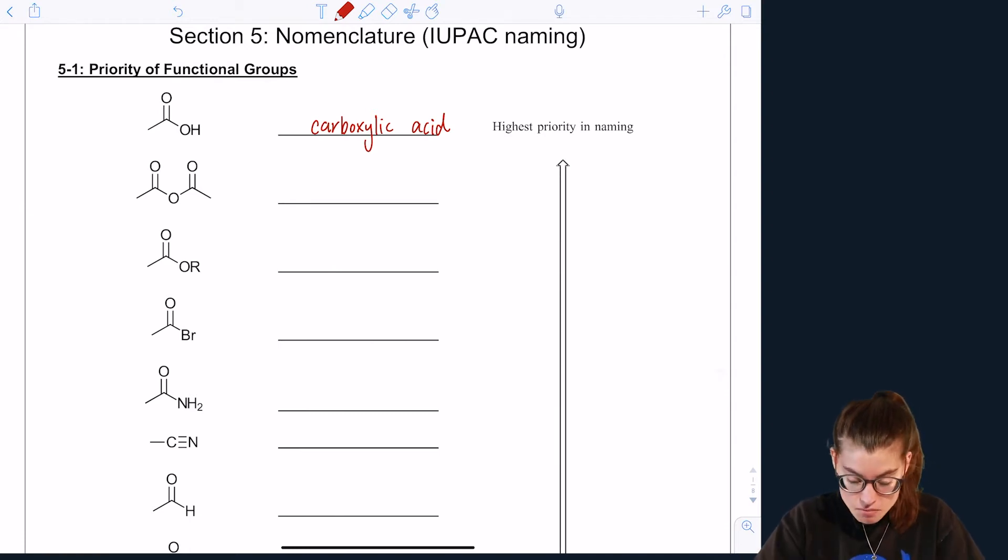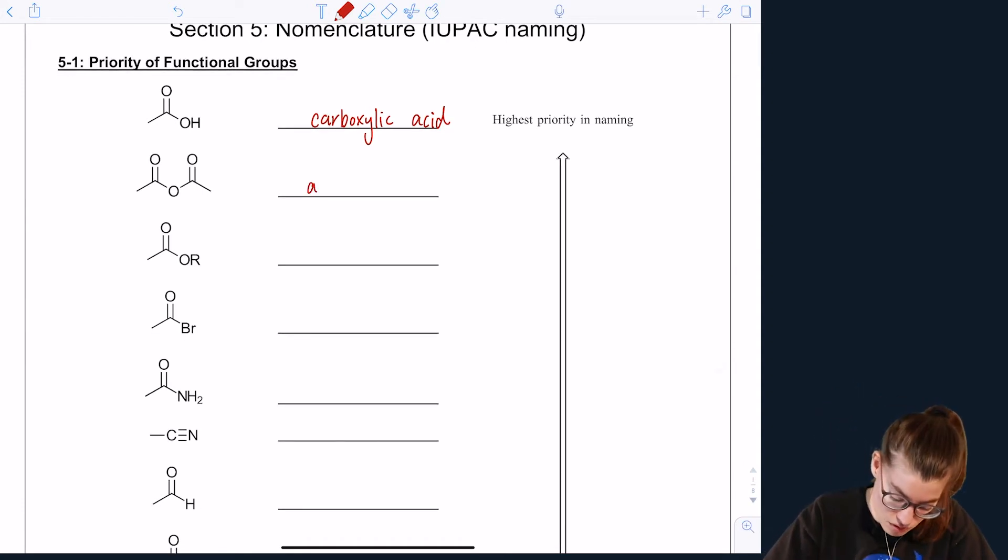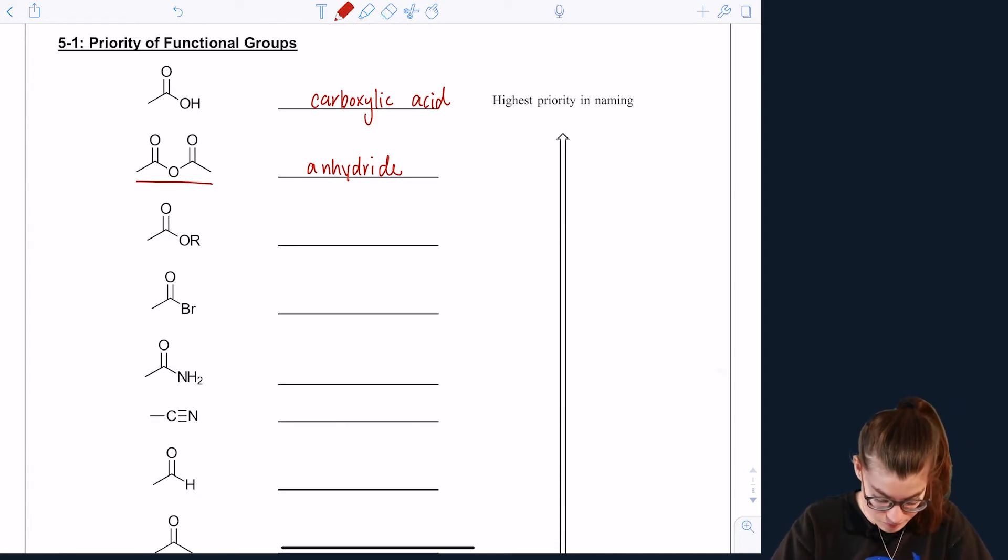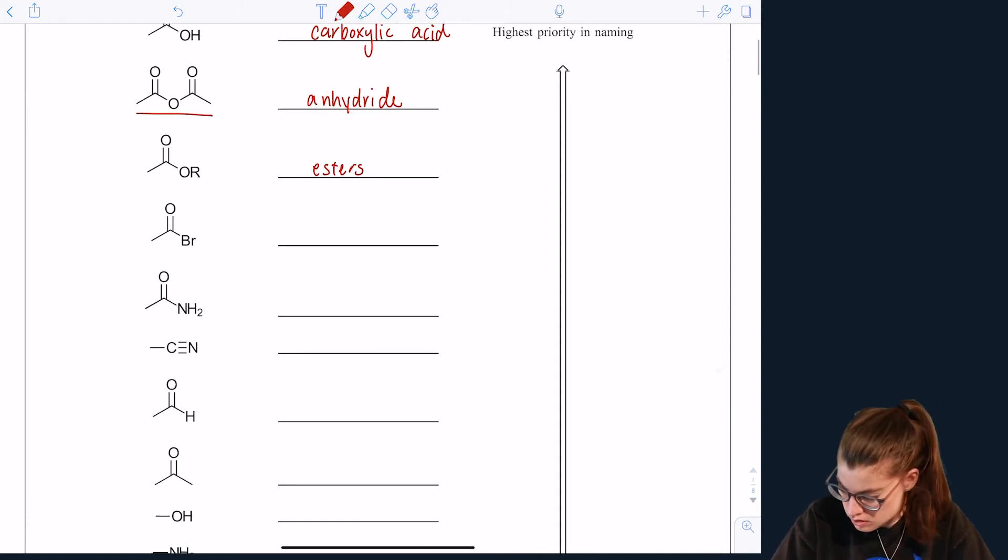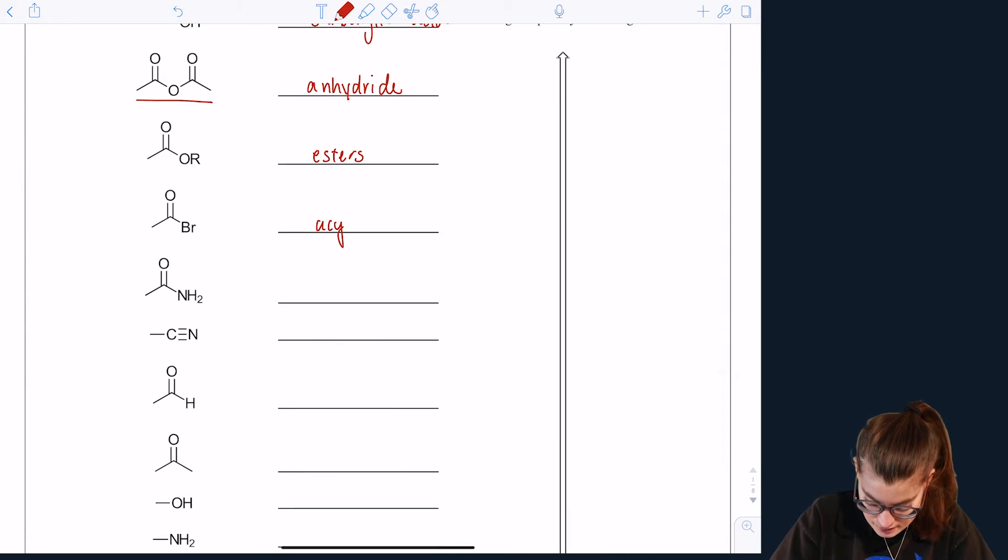At the top of our priority is carboxylic acids. So those are the highest priority. If you ever have a carboxylic acid in your compound, that carboxylic acid will be part of the parent chain. Next in priority are the anhydrides. Next is esters. And then we have acyl halides. Now this doesn't have to be a bromine. Here we say it's an acyl halide. So this could be any halogen.